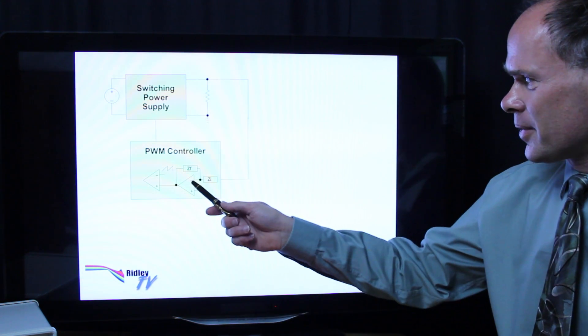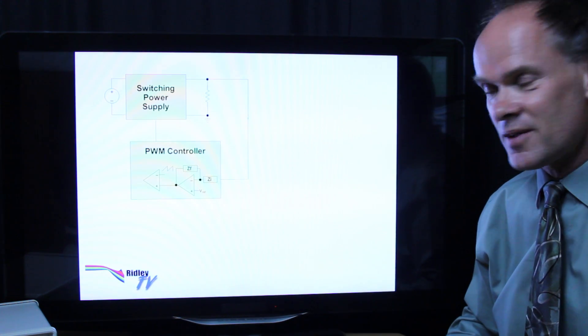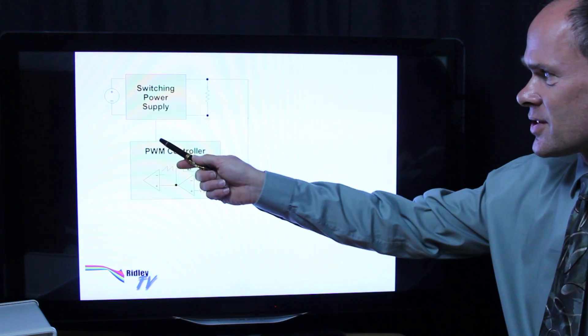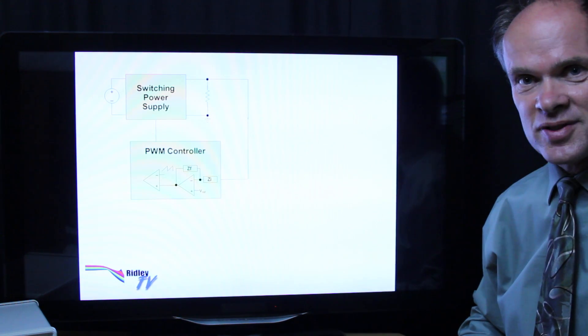It can be an op-amp integration network or it could be a digital implementation of that followed by a comparator or a processor. That gives us the duty cycle to our power supply and then here is the feedback loop around the system.